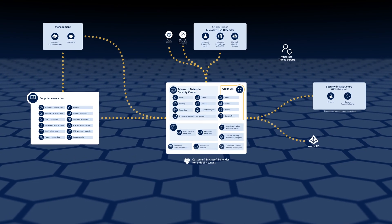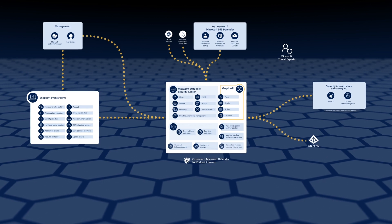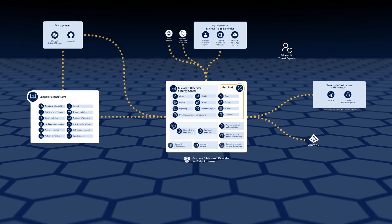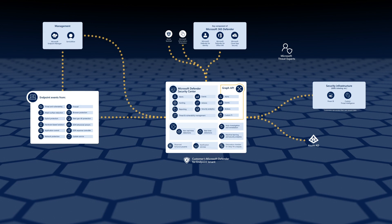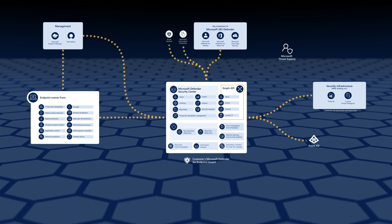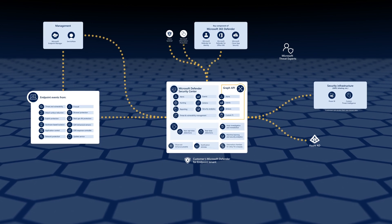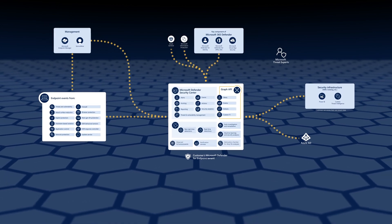Key architectural components of Defender for Endpoint are the Security Center console, endpoint sensors, users, and customers' isolated and secure Microsoft Defender for Endpoint tenants. To learn more about the service's architecture, see our documentation on Microsoft Docs.